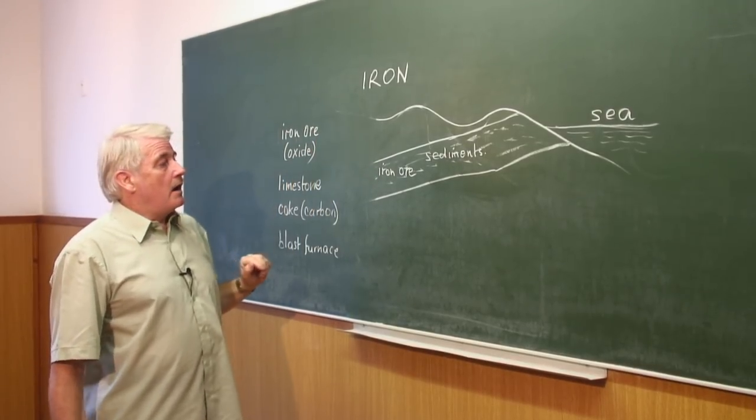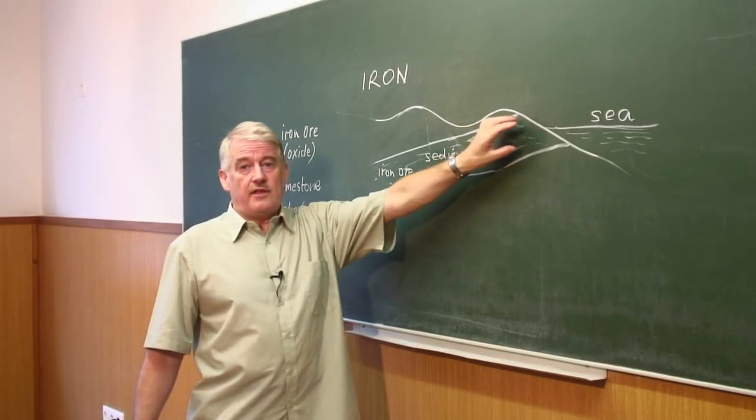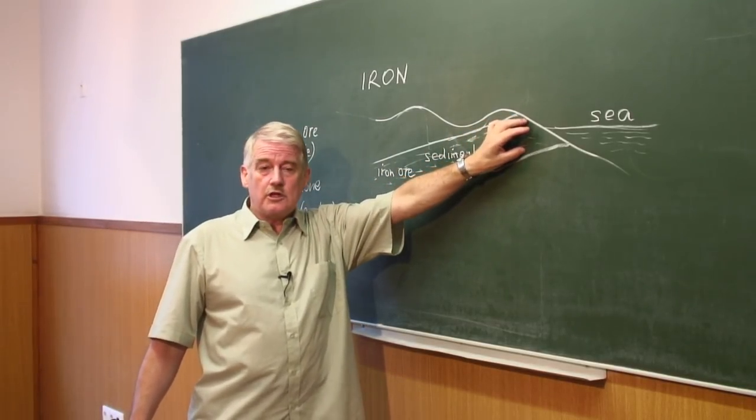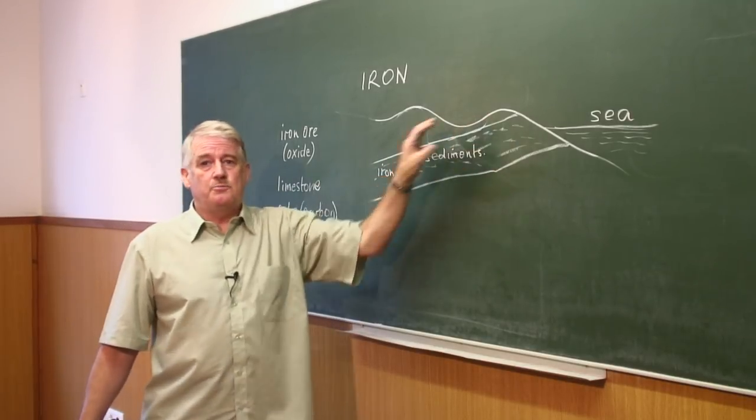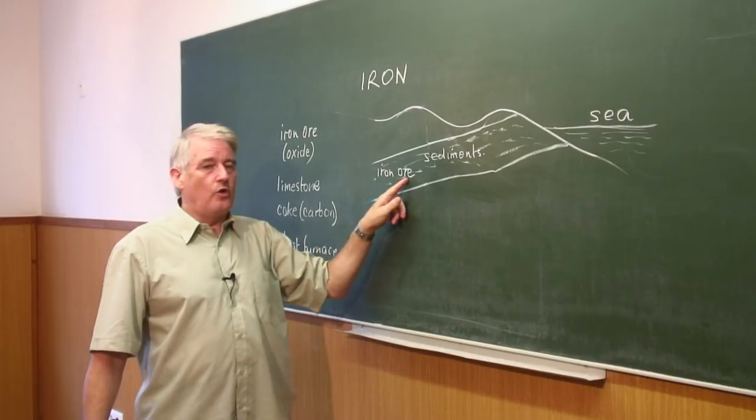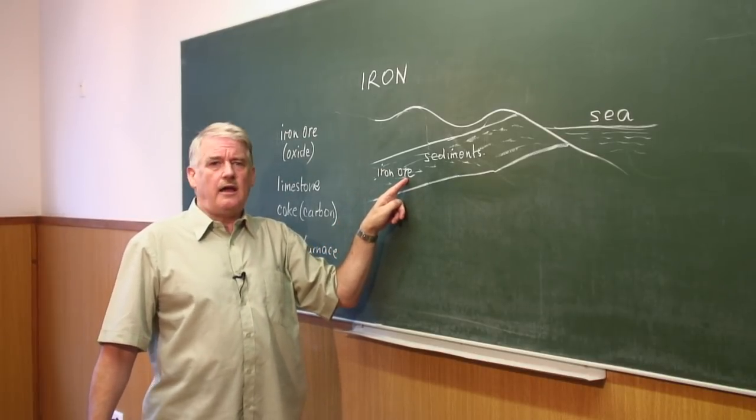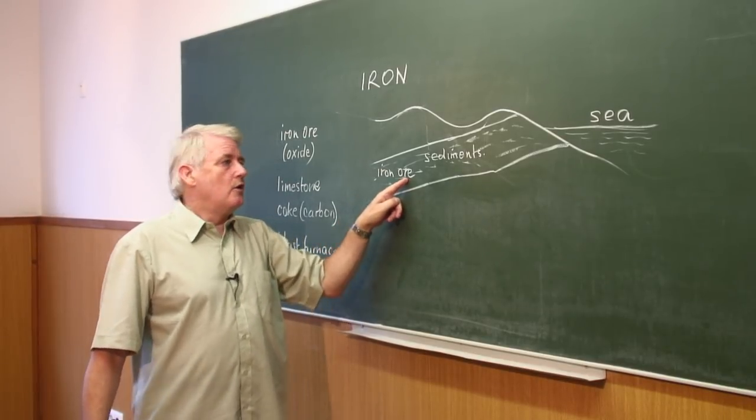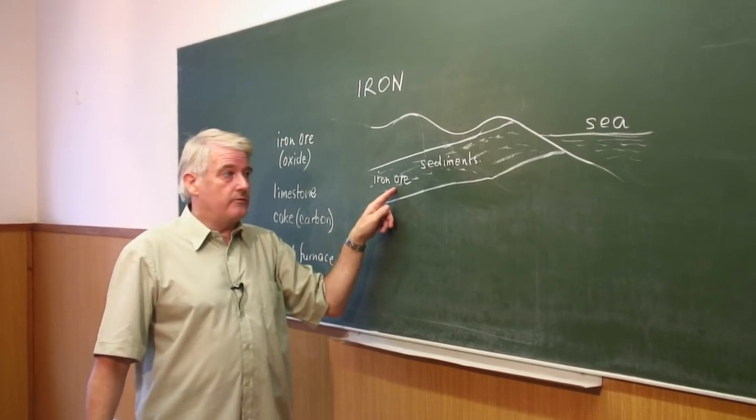Now, we find the iron underground, usually quite close to the surface, in large beds. Not as iron, but as what we call iron ore, which is normally iron oxide. It can be iron sulfide.